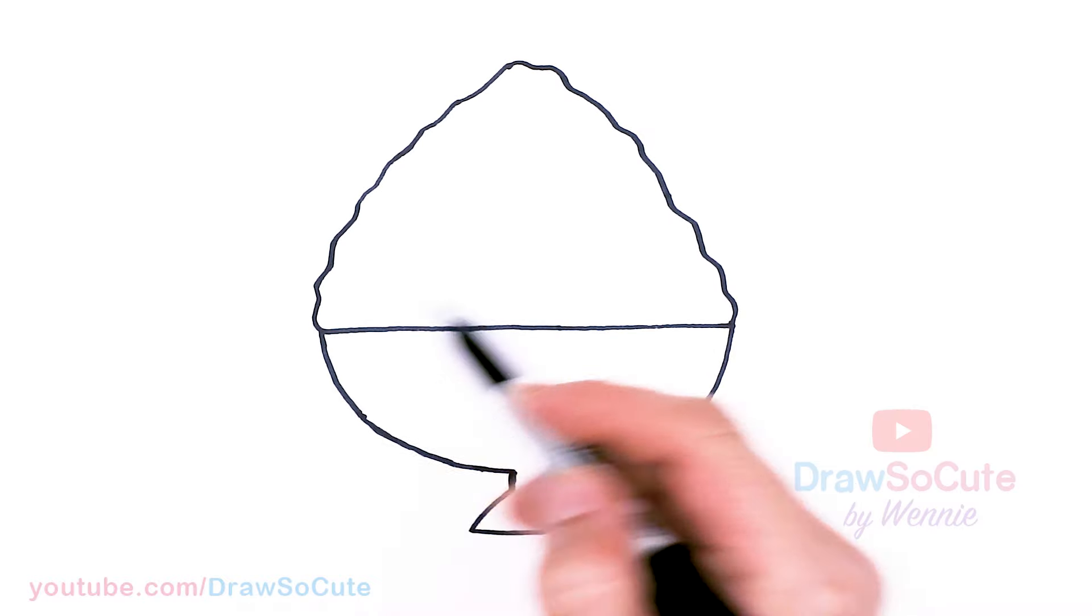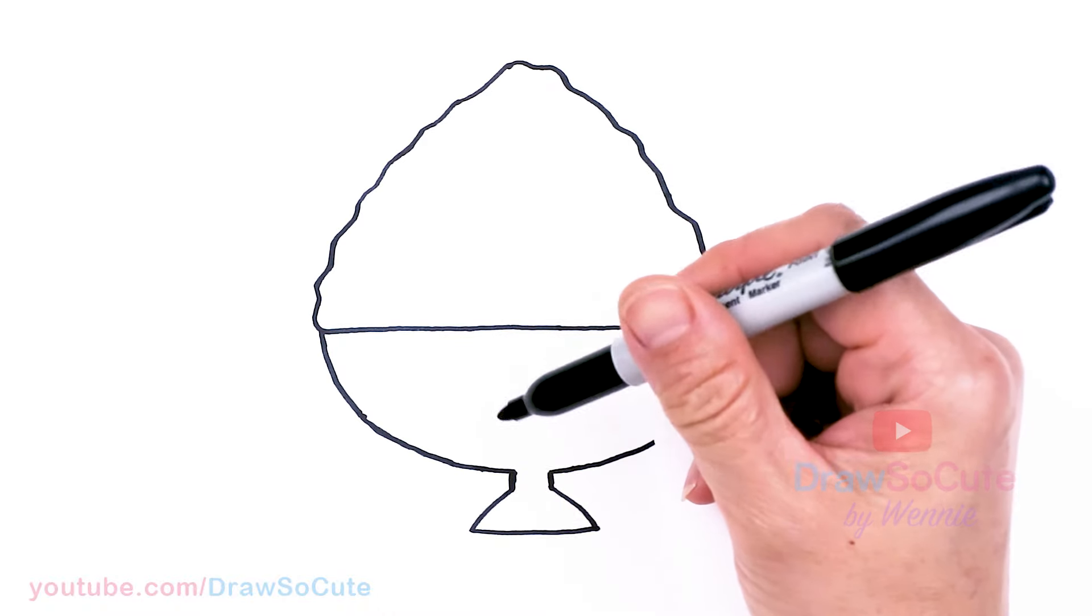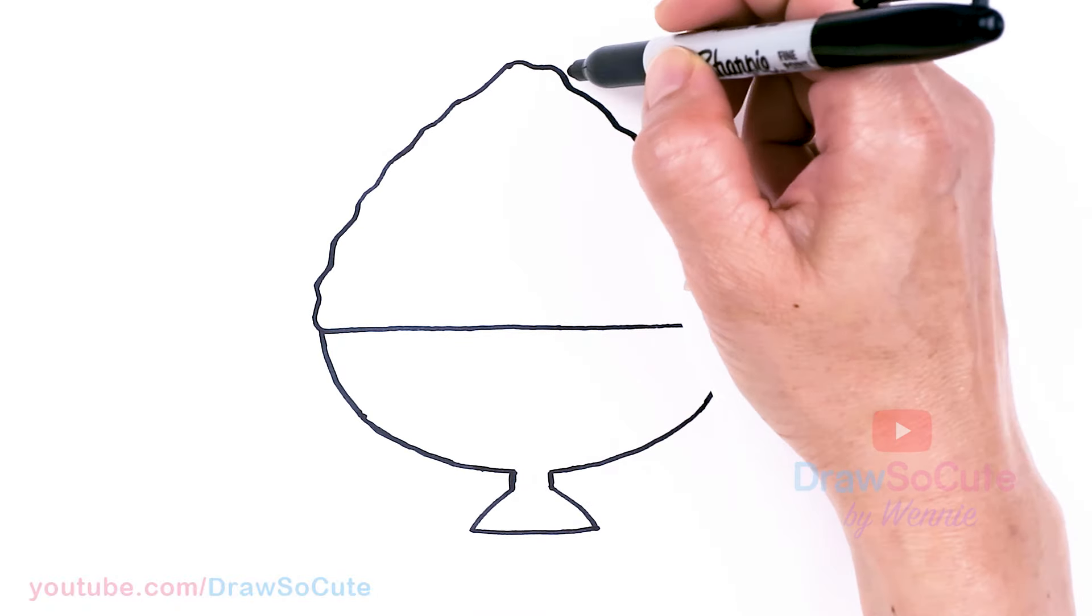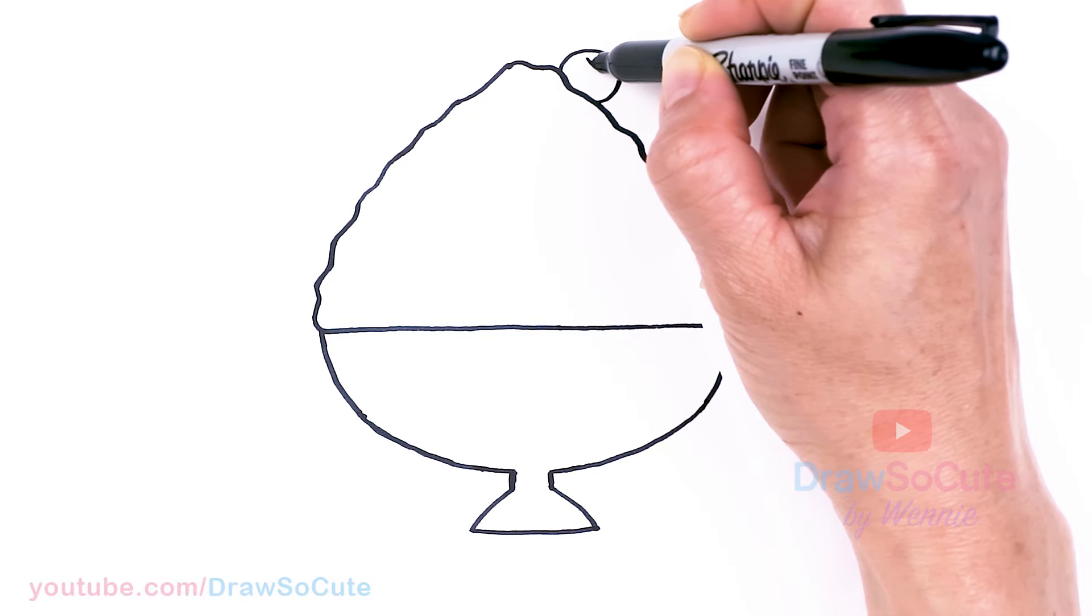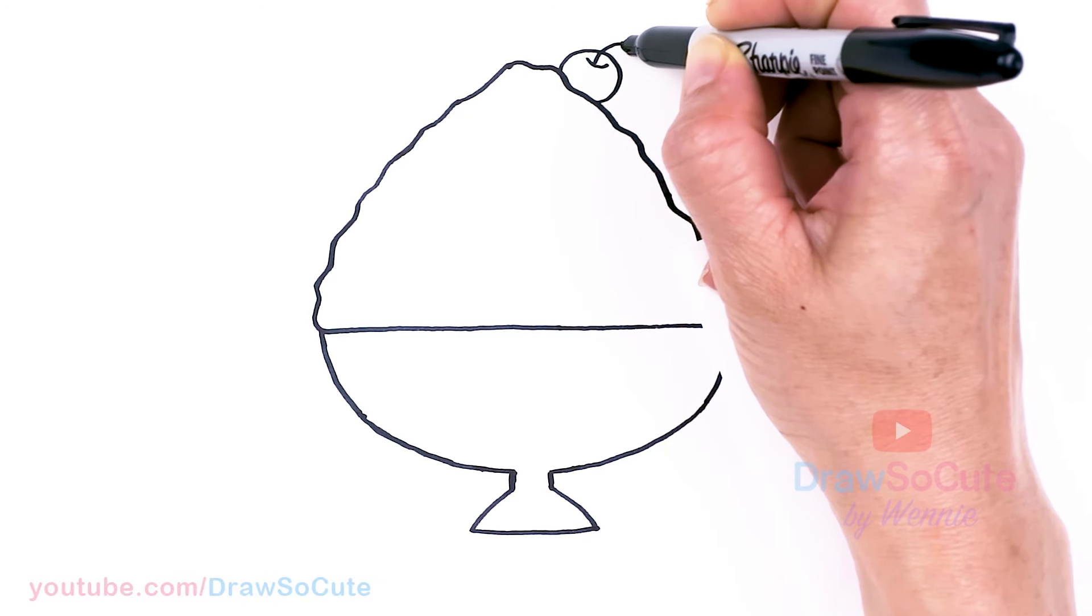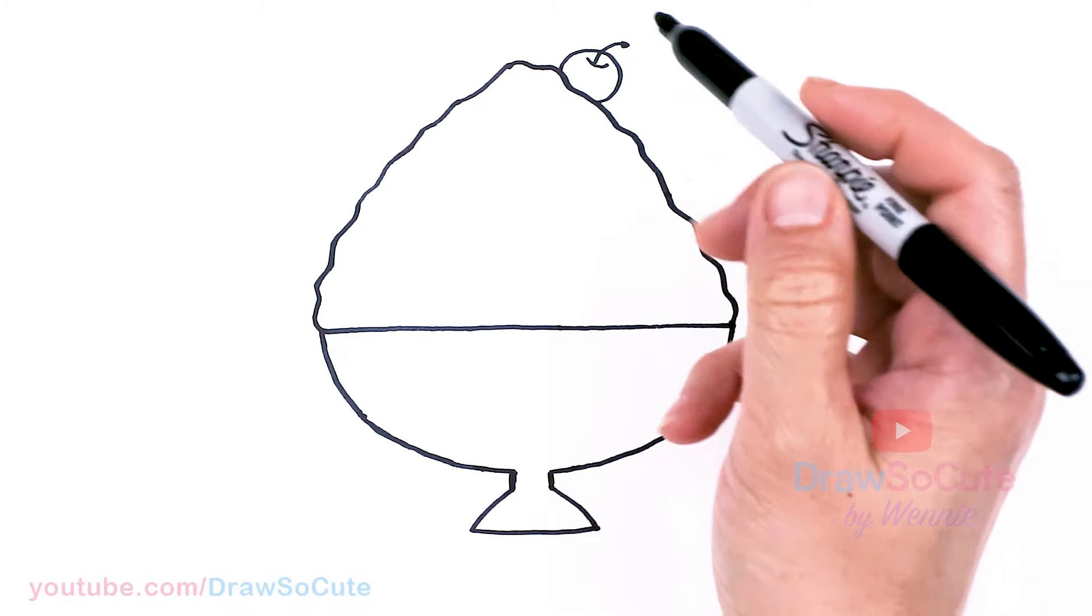From there you can put whatever you want on your shaved ice. I'm just going to make mine really simple today. I'm just going to add a cherry over right here, so just draw a circle. Then right at the top here, I'm going to draw a curve and put in a stem. And thicken the end.